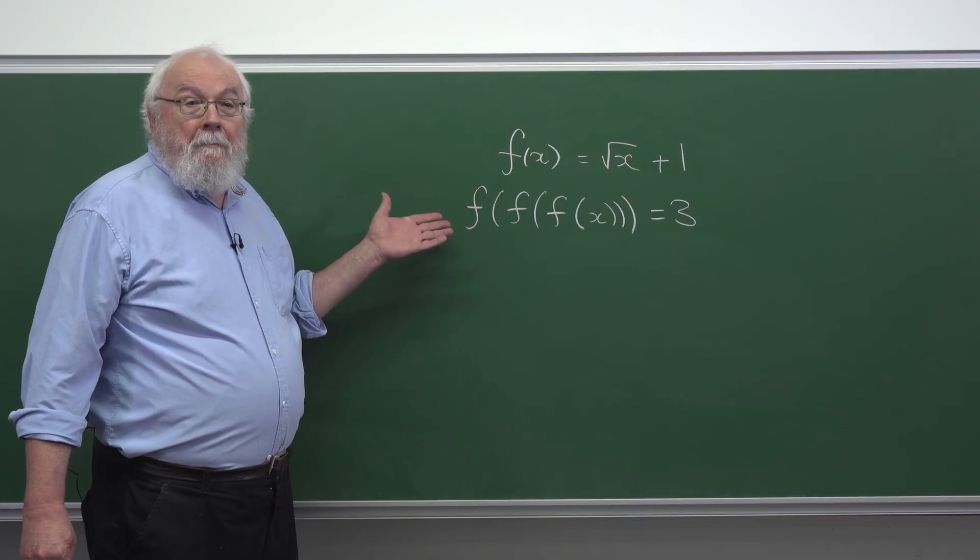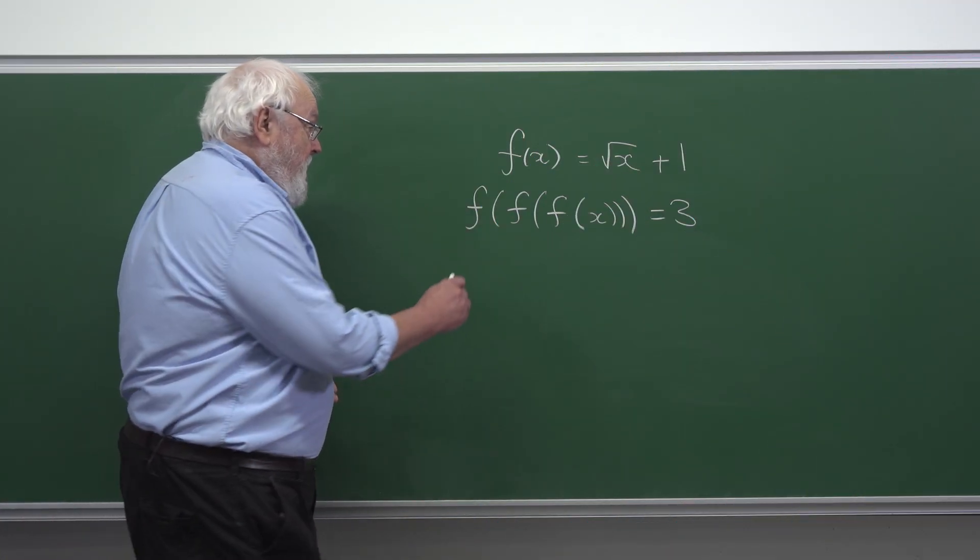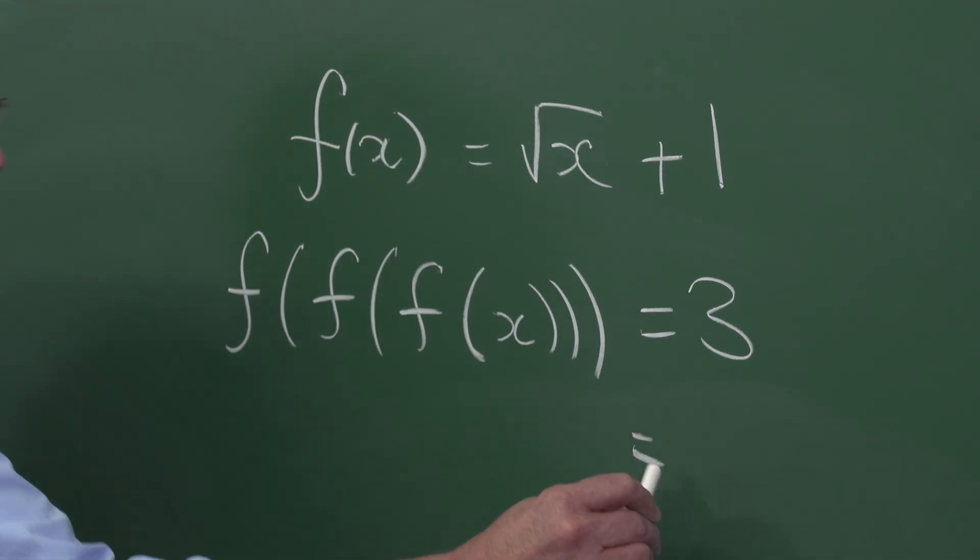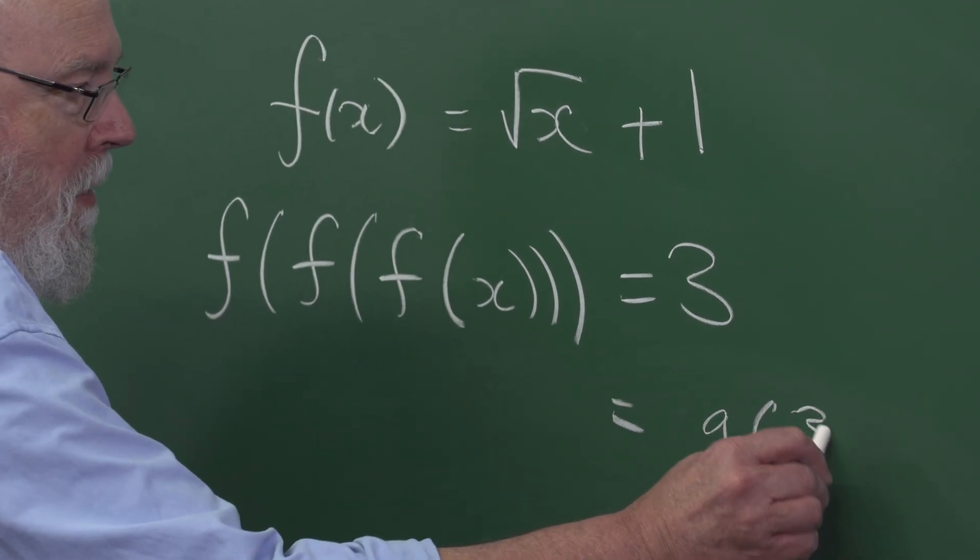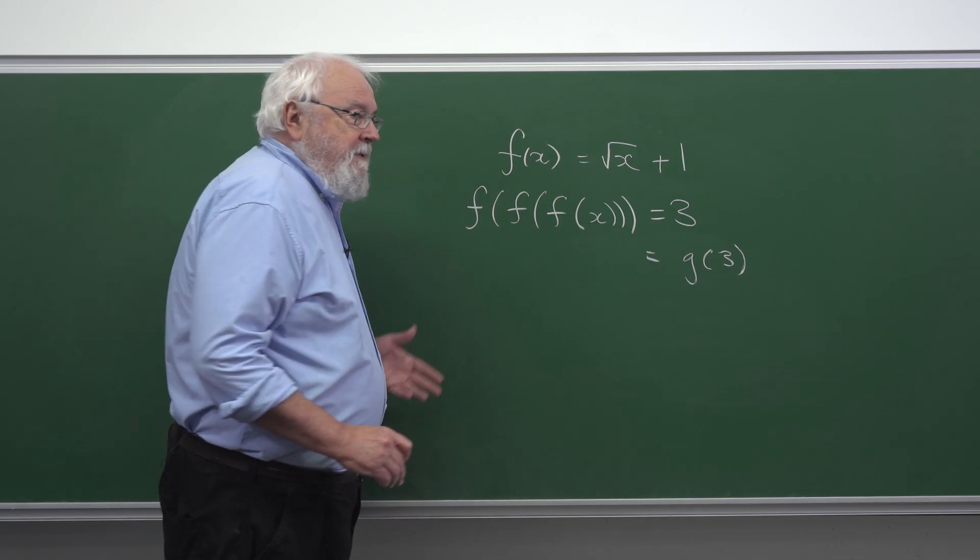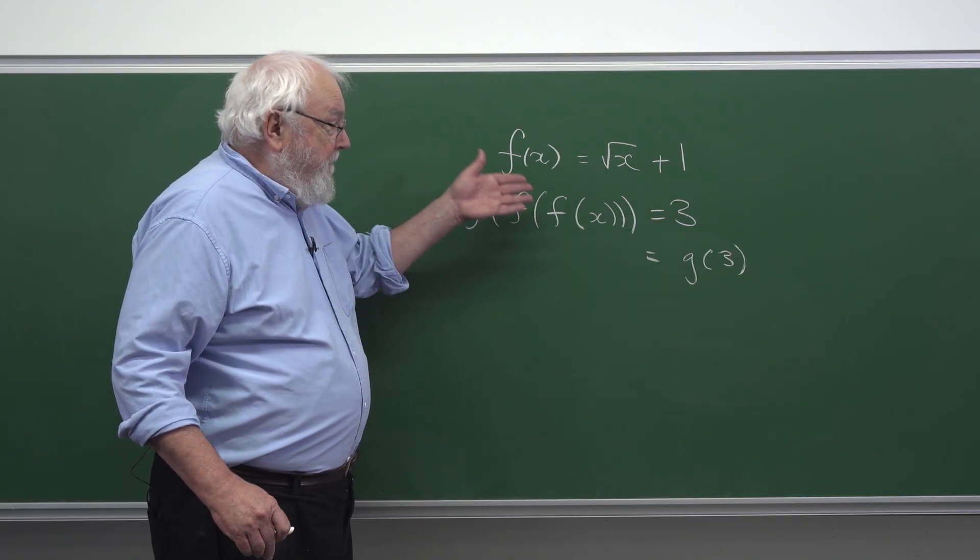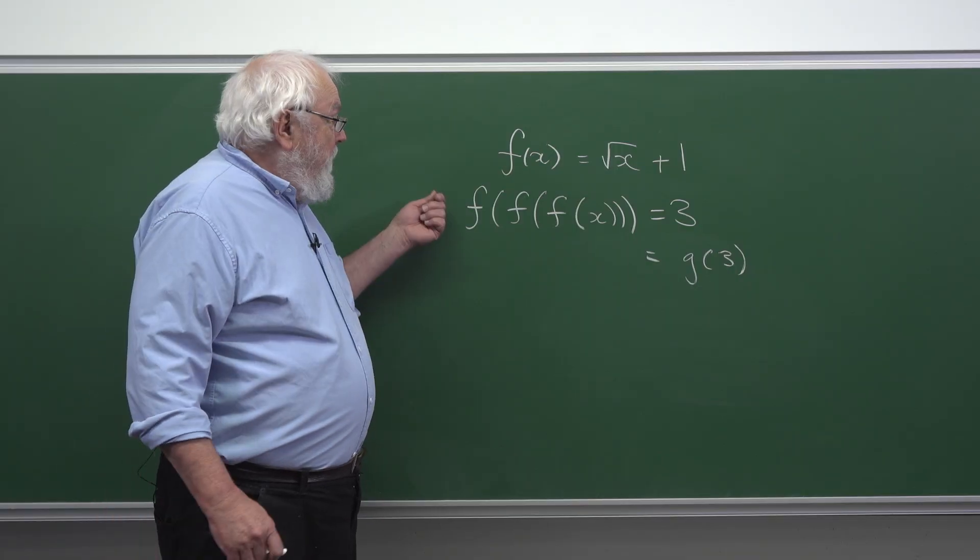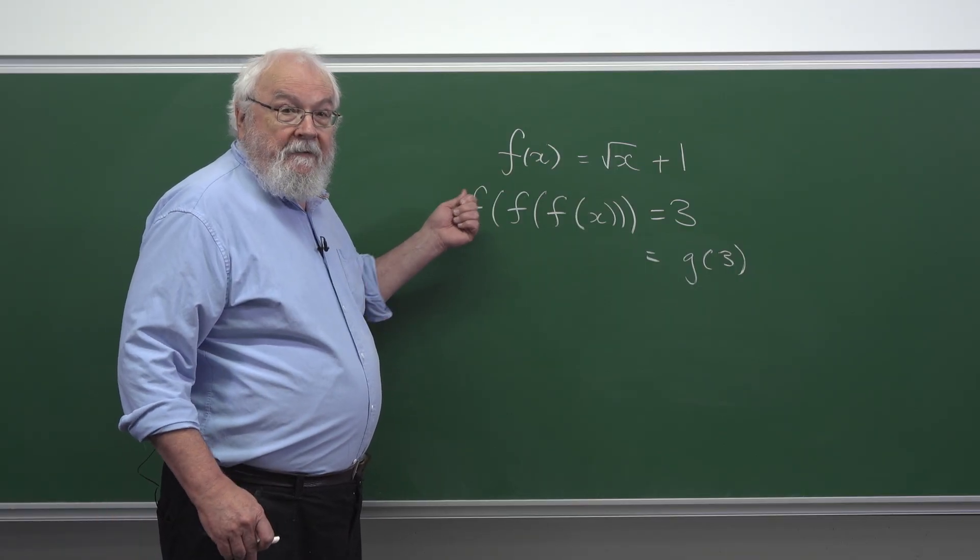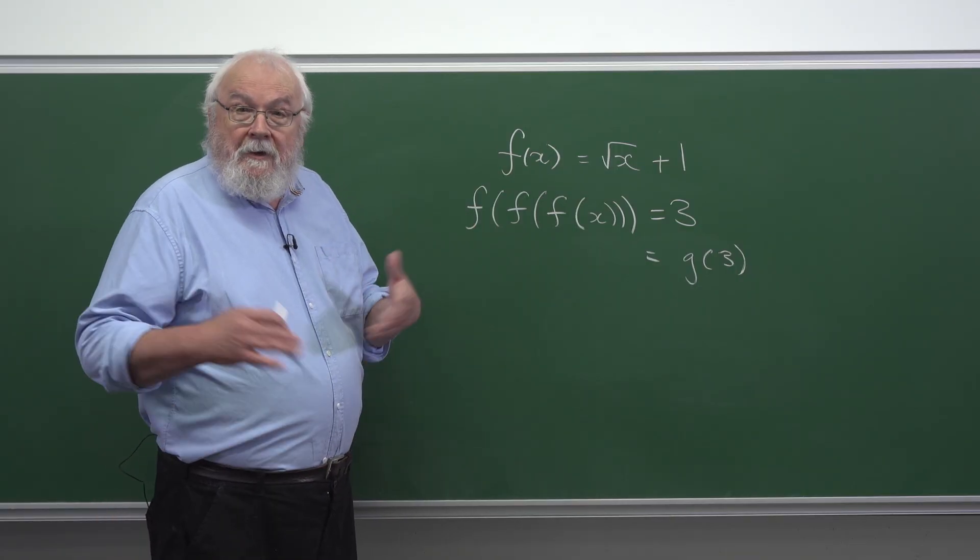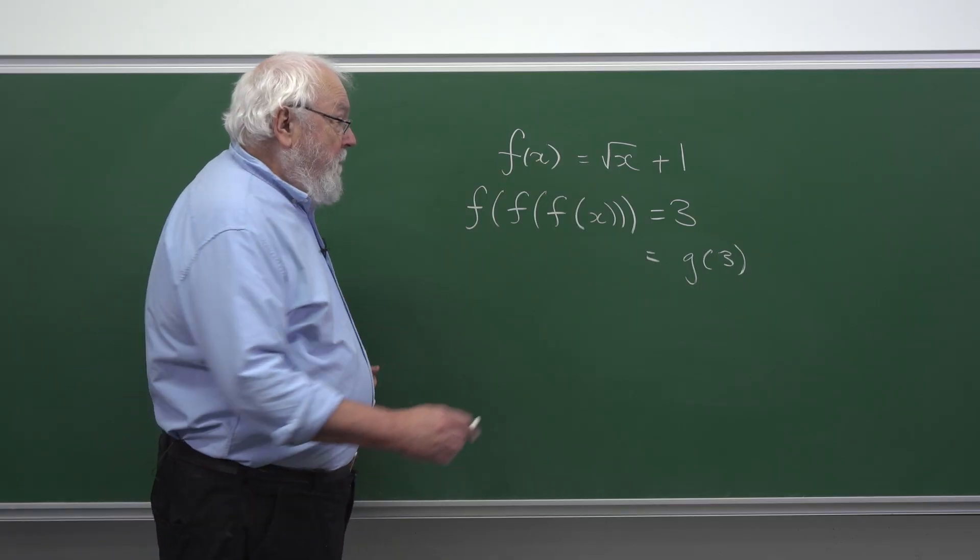So I take this equation and I apply g to both sides. On the right hand side you've just got g of 3. On the left hand side you've got g of f of f of f of x. But at the beginning you've got g of f of stuff, and so you can just forget that g of f. And we're left with